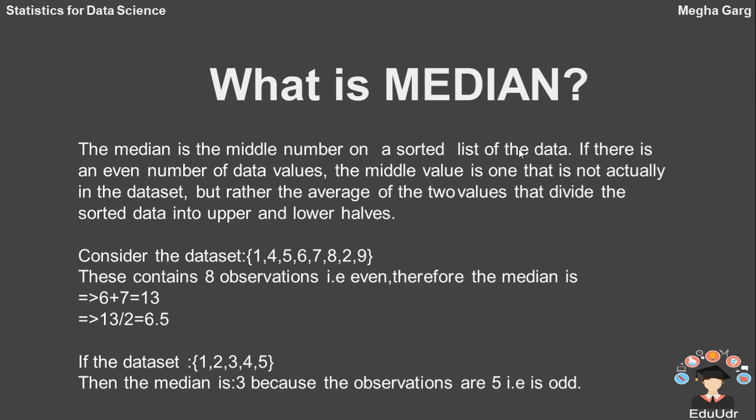Now, our second topic is median. The median is the middle number on a sorted list of the data. If there is an even number of data values, the median value is one that is not actually in the data set but rather the average of the two values that divide the sorted data into upper and lower halves. Consider the situation. We have eight observations that is an even number. Therefore, the median is average of these two numbers: 6 plus 7 equals 13 and 13 divided by 2 is 6.5. And if the data set has five observations that is odd number, then the median is the middle value that is 3.